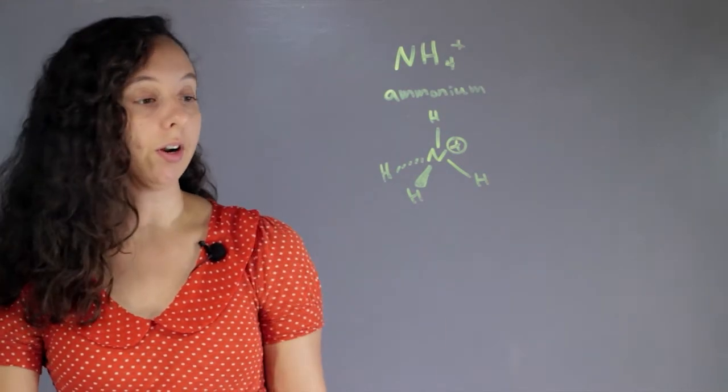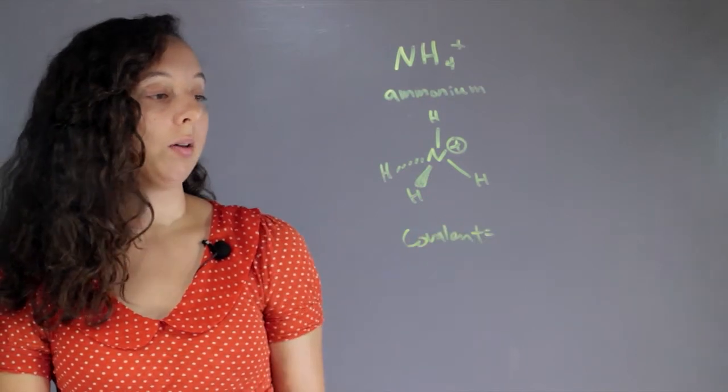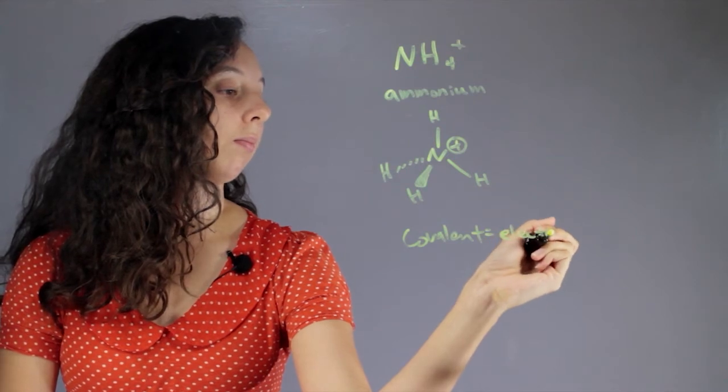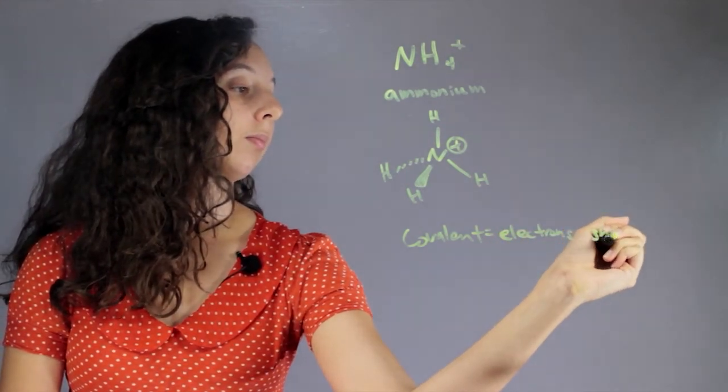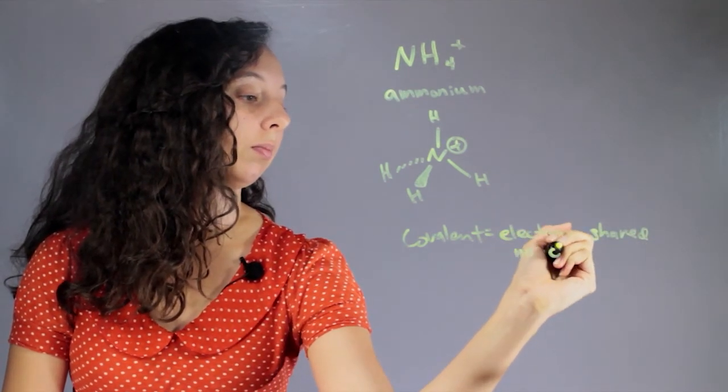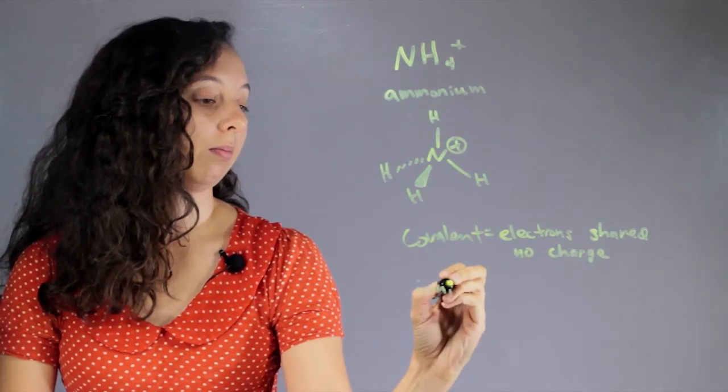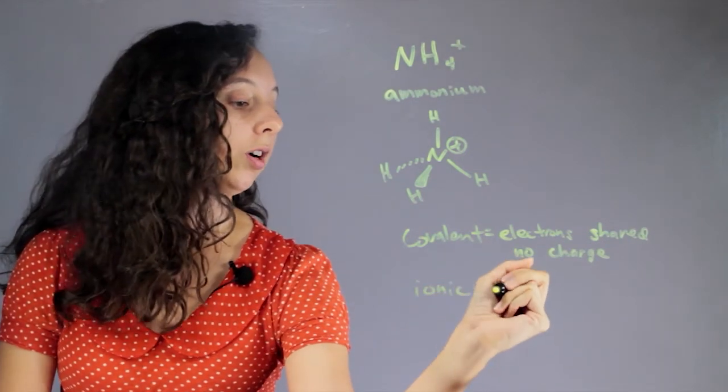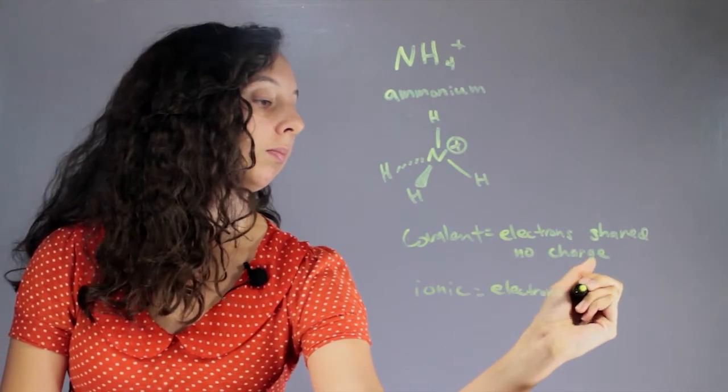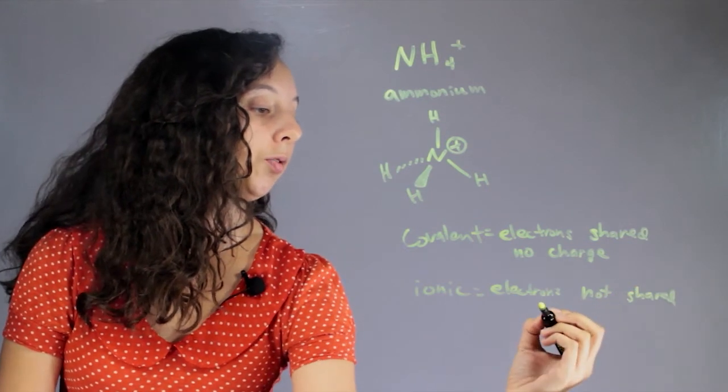Well, let's remember that covalent means that the electrons are completely shared and there's no charge. With ionic, electrons are not shared and there's full charges.